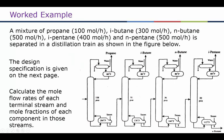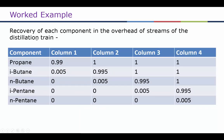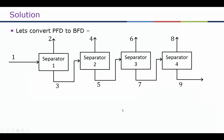Here we look at an example where propane, isobutane, normal butane, isopentane and normal pentane are separated in a distillation train — a number of distillation columns in sequence where one product is separated or purified in each column. Propane, being the lightest hydrocarbon, comes out from the first distillation column as an overhead product, followed by isobutane, then normal butane, isopentane, and in the bottoms of the last column we get normal pentane. We convert the process flow diagram into a block flow diagram to simplify the problem.